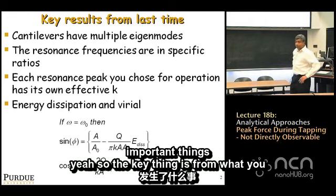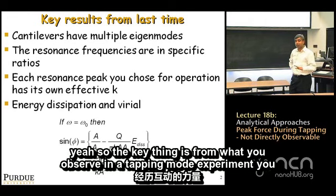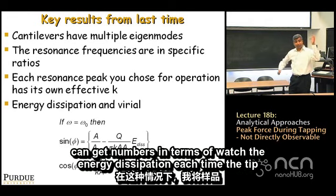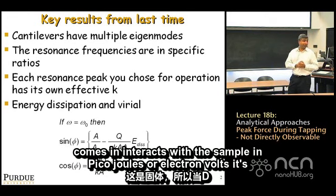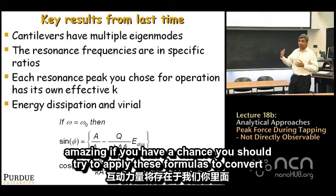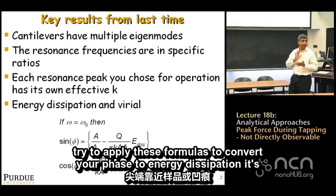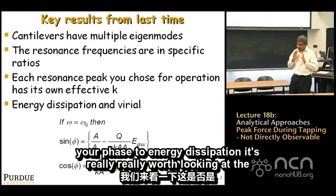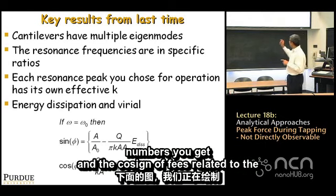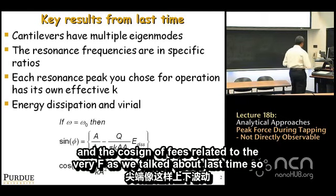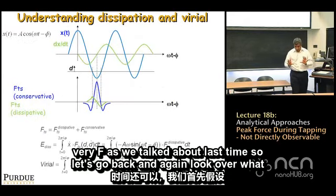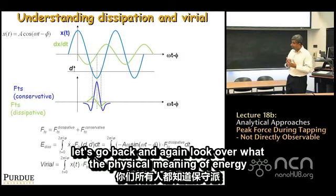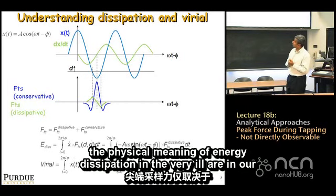From what you observe in a tapping mode experiment, you can get numbers for the energy dissipation each time the tip interacts with the sample — in picojoules or electron volts. You should try applying these formulas to convert your phase to energy dissipation; it's really worth looking at the numbers. The cosine of phi is related to the virial.